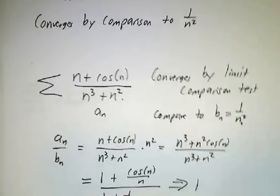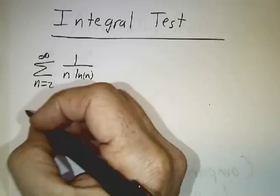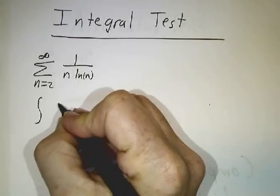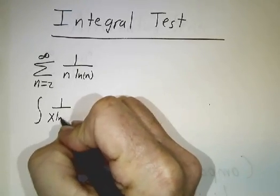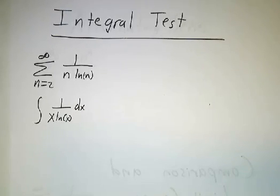We'll do one more and then take a break. The integral test. If you have a function that's decreasing, you compare it to an integral. In this case, you want the integral of 1 over x natural log of x. And you ask, does that converge or not?